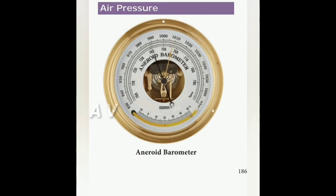Planetary winds blow in almost the same direction throughout the year, which is why they are also called permanent winds. Seasonal winds change direction according to the season and are called monsoon winds. These winds blow from sea to land during summer and from land to sea during winter.